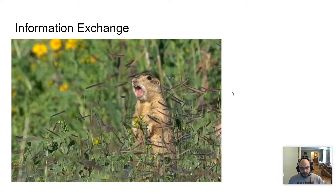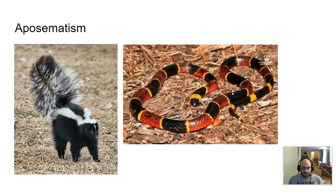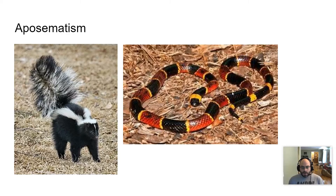There are other instances where animals exchange information as a way of communicating. Here's a picture of a prairie dog warning other prairie dogs that there's probably a problem and that they should all go underground. There are also warnings called aposematism, where an animal will exhibit certain behaviors or have phenotypic traits as a warning to other animals — like a skunk lifting its tail or a snake's coloration signaling 'don't get near me,' keeping those animals safe.